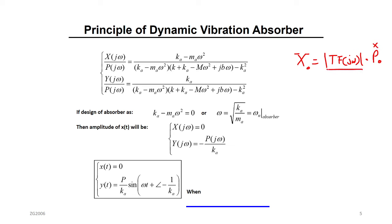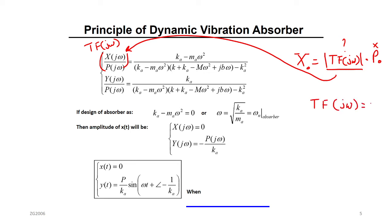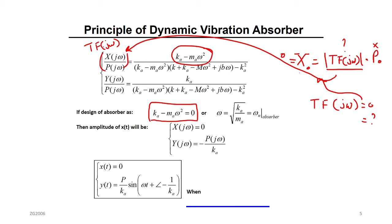To make x equal to zero, we need to make the sinusoidal transfer function G(jω) equal to zero. This is achieved by making the numerator of the transfer function equal to zero. If the numerator equals zero, the sinusoidal transfer function equals zero, the amplitude x equals zero, and the objective — reducing machine vibration to zero — is achieved.